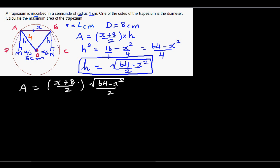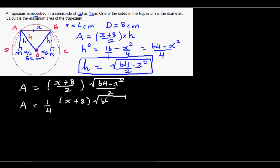As X changes, the area changes. Factoring out one quarter, the area A(X) equals one quarter times (X + 8) times the square root of (64 minus X squared).